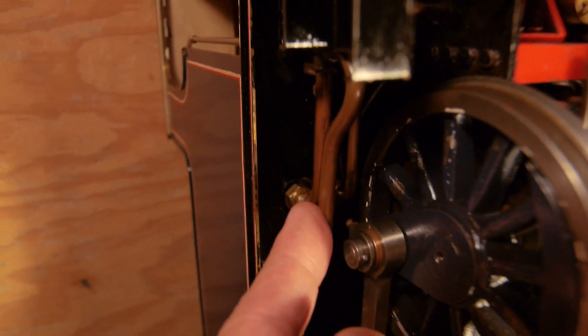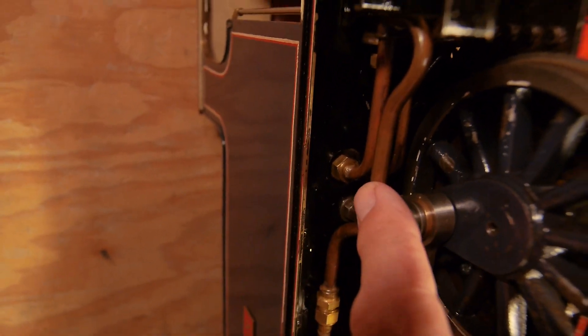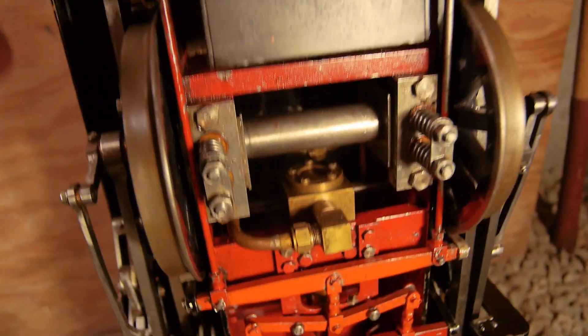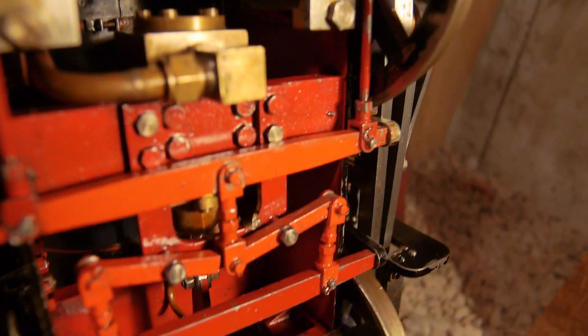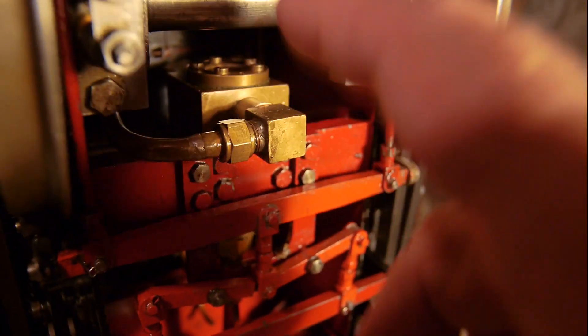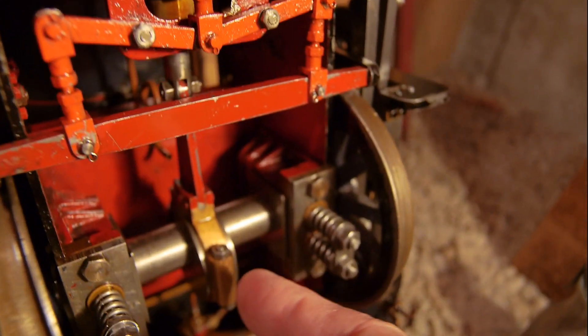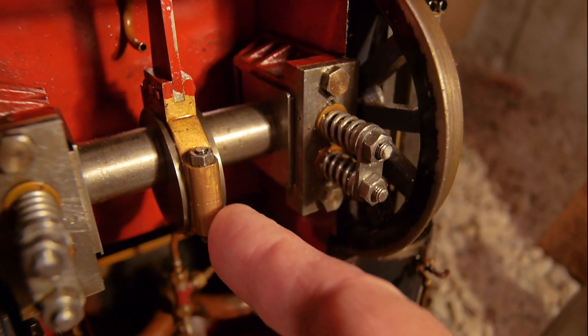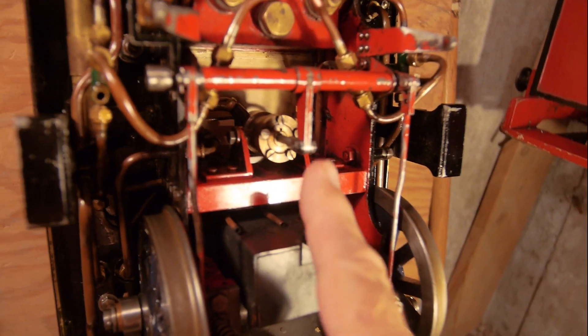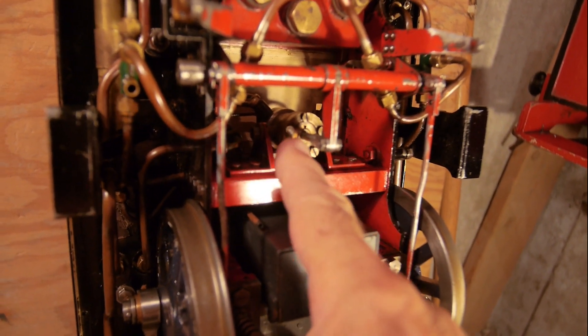From the rear tank, down on this side here, the rear tank and the side tanks feed the axle pump which is down here. You can see the axle pump eccentric that drives the axle pump. The steam brake that I've just been working on is right there. You can see the steam brake cylinder there.